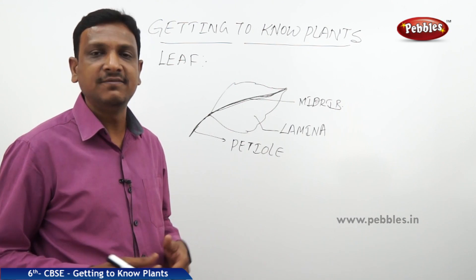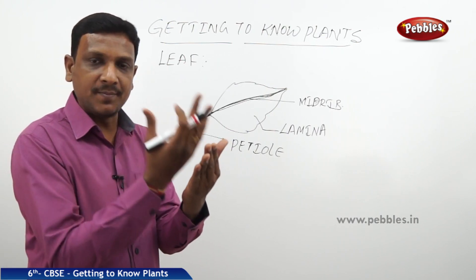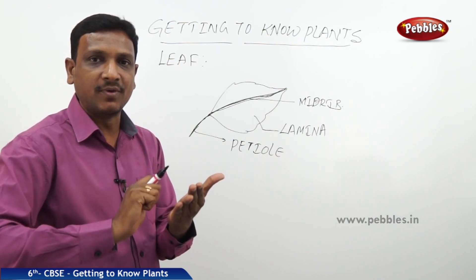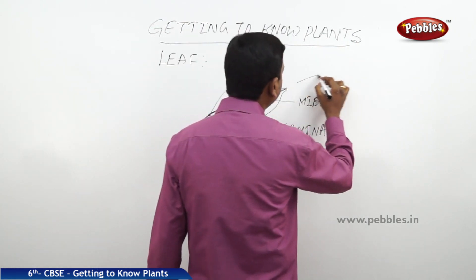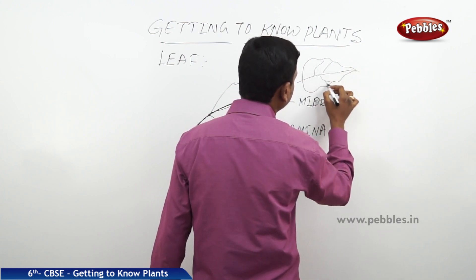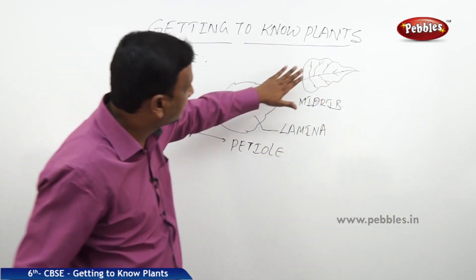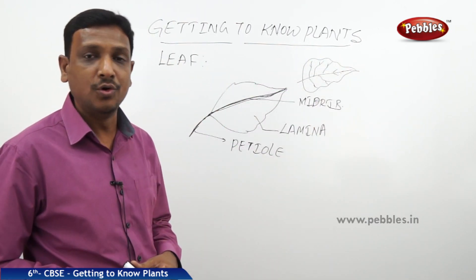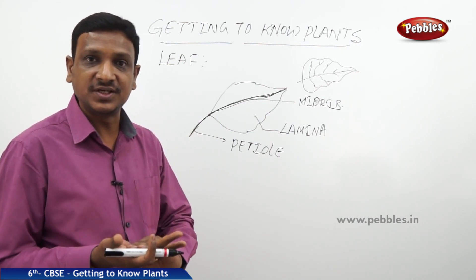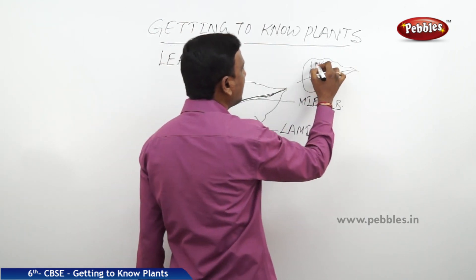If you take a peepal leaf and put a paper on the backside of the leaf and trace it with a pencil, you will find a sketching with so many lines. You can also feel these lines with your hand. If you take a dried peepal leaf and touch it on the backside — the under surface of the leaf — you will find so many lines, and all these are called veins.